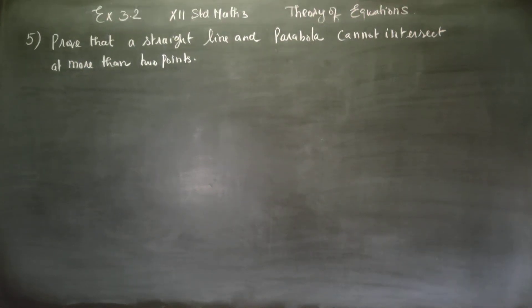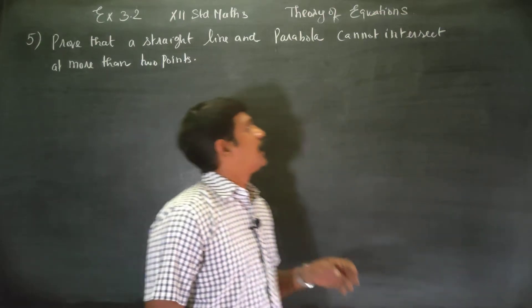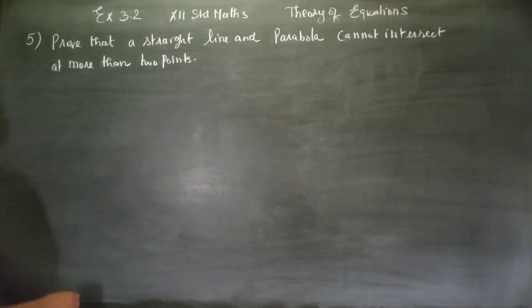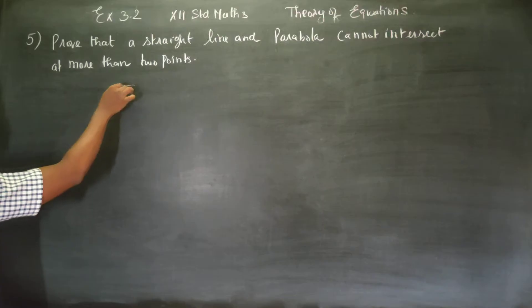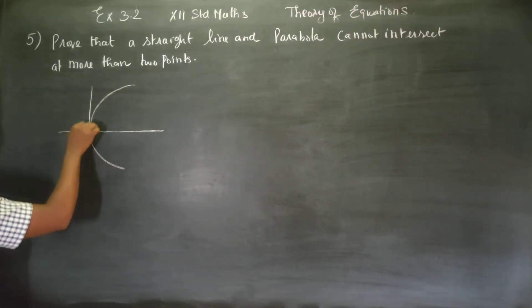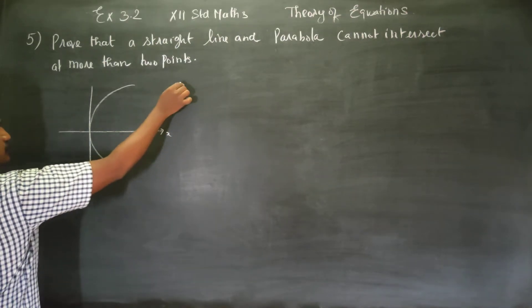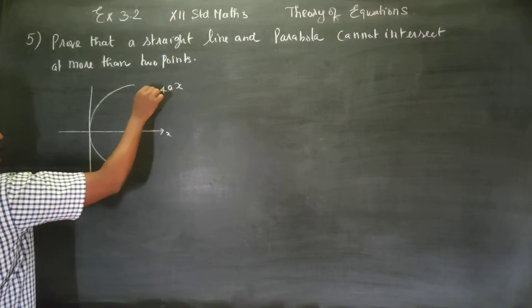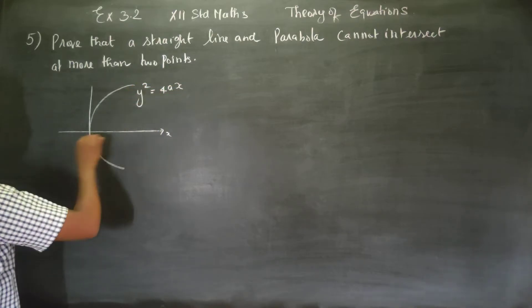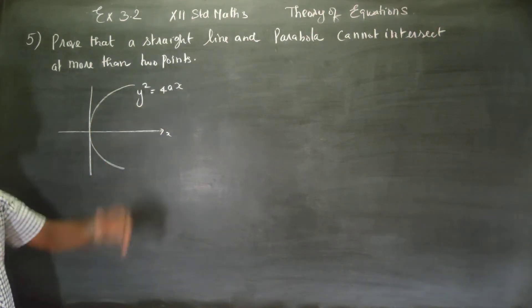Hello students. In exercise number 3.2, sum number 5: prove that a straight line and a parabola cannot intersect at more than two points. Consider a parabola that is open rightward along the x-axis. The parabola is symmetrical about the x-axis, and its equation is y squared is equal to 4ax.